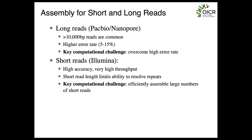On the other hand, short read sequencing from Illumina is very high accuracy — less than one percent error rate — and very high throughput. You can get a lot of short 100 base pair reads. The drawback of Illumina sequencing is the short read length, which limits our ability to resolve repeats. The key computational challenge is being able to efficiently deal with the massive amount of sequencing data that Illumina produces.